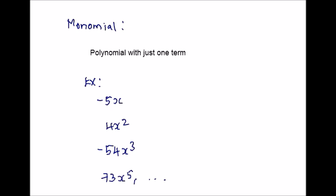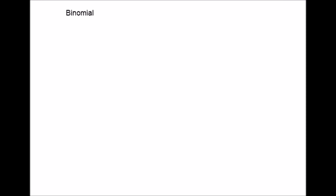Now let us move on to binomial. Binomial is nothing but a polynomial with two terms. Bi means two. Here are the examples for binomial.